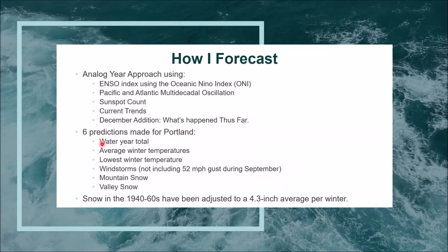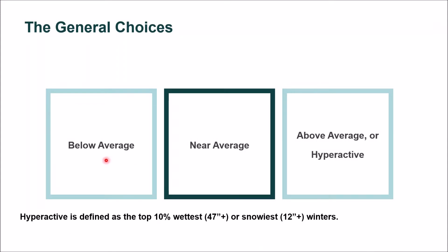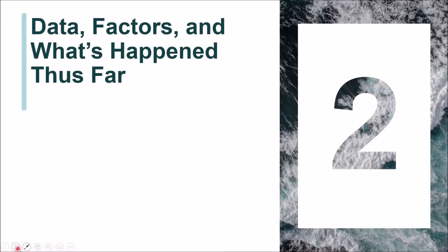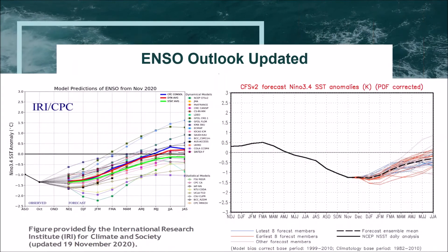I will make the same six predictions: the water year rainfall total, the average winter temperatures, the lowest winter temperature, windstorm frequency and peak gust, mountain snowfall or snow depth, and valley snowfall. I grouped them into three general choices before fine-tuning for the final forecast — below average, near average, and above average — with hyperactive being the top 10 percent of wettest or snowiest winters.